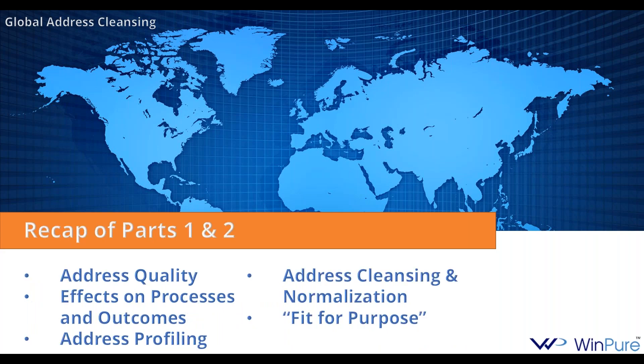The first part of this series was focused on the five most common address quality dimensions or criteria and their effects on other processes and outcomes. The key takeaway was that there are a variety of different requirements surrounding address quality, and it basically boils down to whether the data is fit for purpose — each business area might have different requirements. The second part went more in depth about address hygiene, including data profiling, cleansing, and normalization. The key takeaway there was that general hygiene is really just the first layer of usefulness, which can impact data matching, deduplication, and address verification.